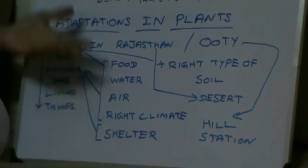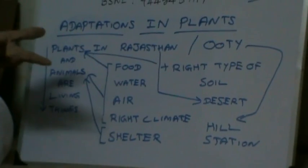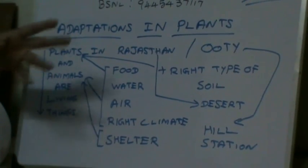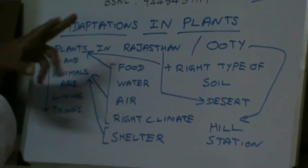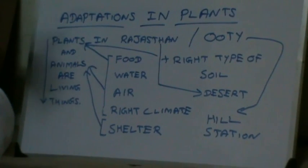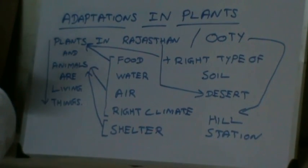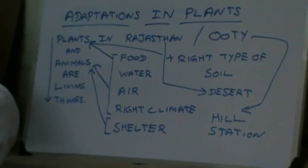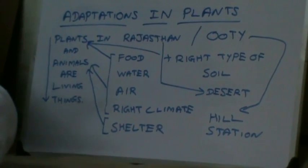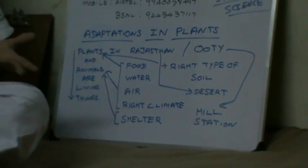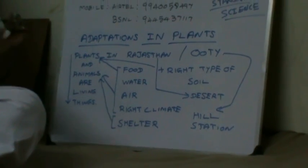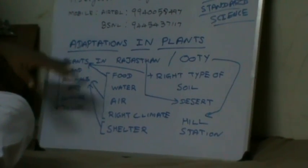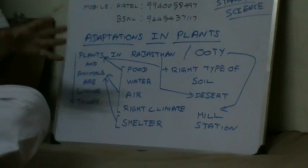Plants usually grow under sun because they require sun for photosynthesis, which is the part of food preparation. Plants are self-sufficient living things — they can prepare their food themselves. On the other hand, if you take animals, they have to get the food only from either plants or from other animals.